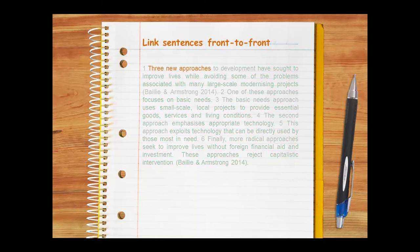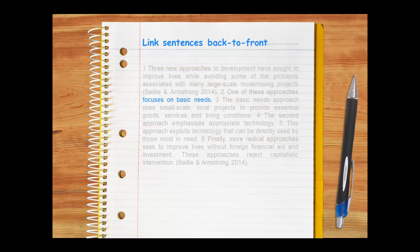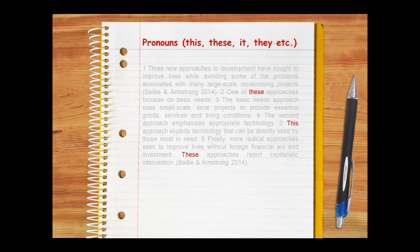When you link sentences front-to-front, you take ideas from the fronts of sentences and include related ideas in the front of subsequent sentences. Explicit cohesive markers like connectives or transition words can also make writing feel more cohesive, as can pronouns — words like this, these, it, they, and so on. The best writers use a variety of front-to-front links, back-to-front links, and explicit cohesive markers.